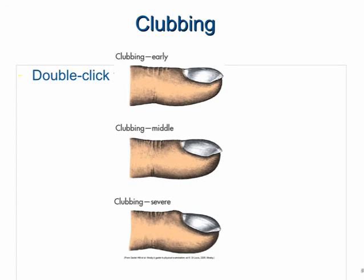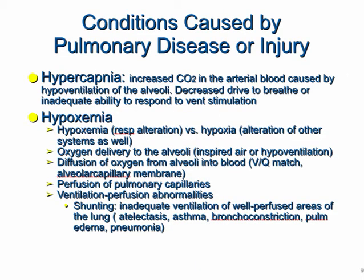Clubbing is seen in patients with chronic pulmonary or cardiac diseases. With significant heart defects causing shunting — meaning mixed saturated and unsaturated oxygen going to the periphery — patients develop clubbing from this chronic state of hypoxemia. You'll see it in the fingers: they get a more rounded shape at the end. It's usually longstanding; it doesn't happen overnight. It's a longstanding process that develops over time.